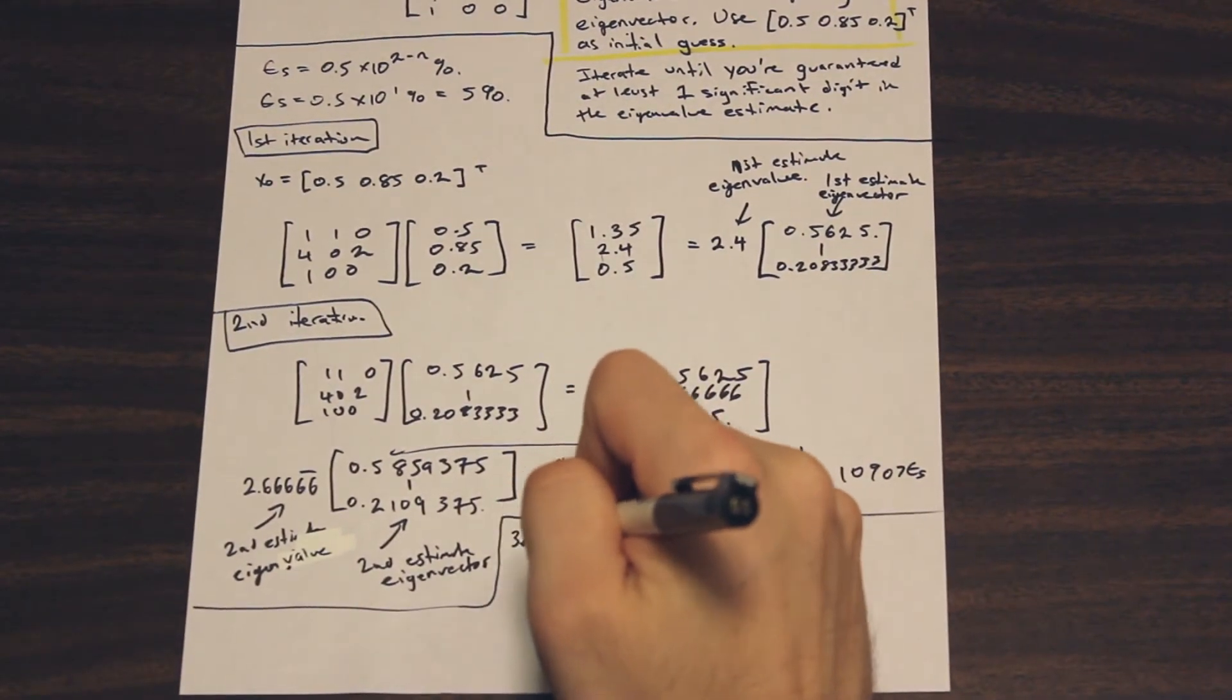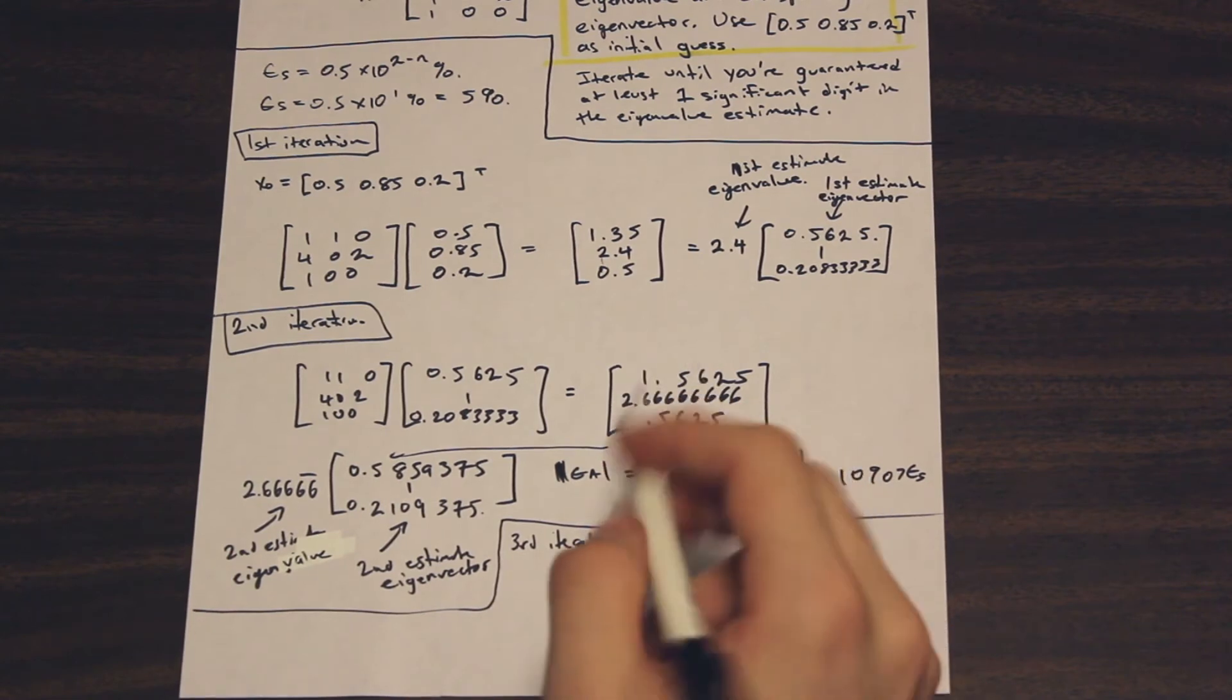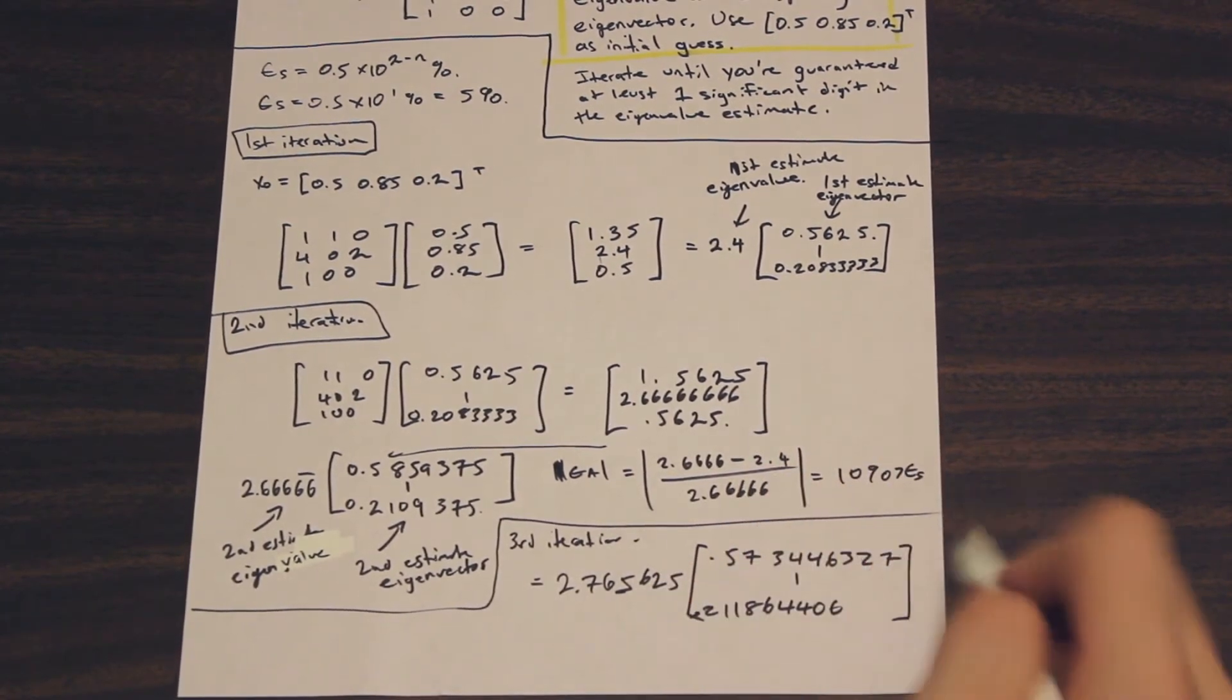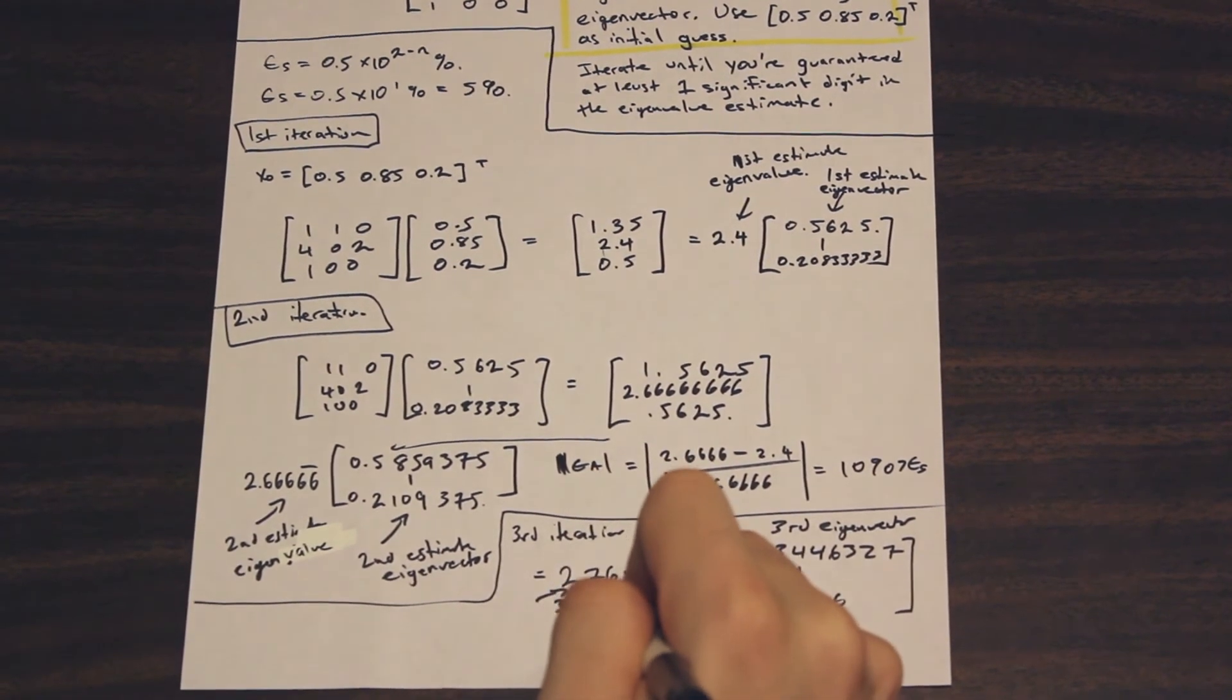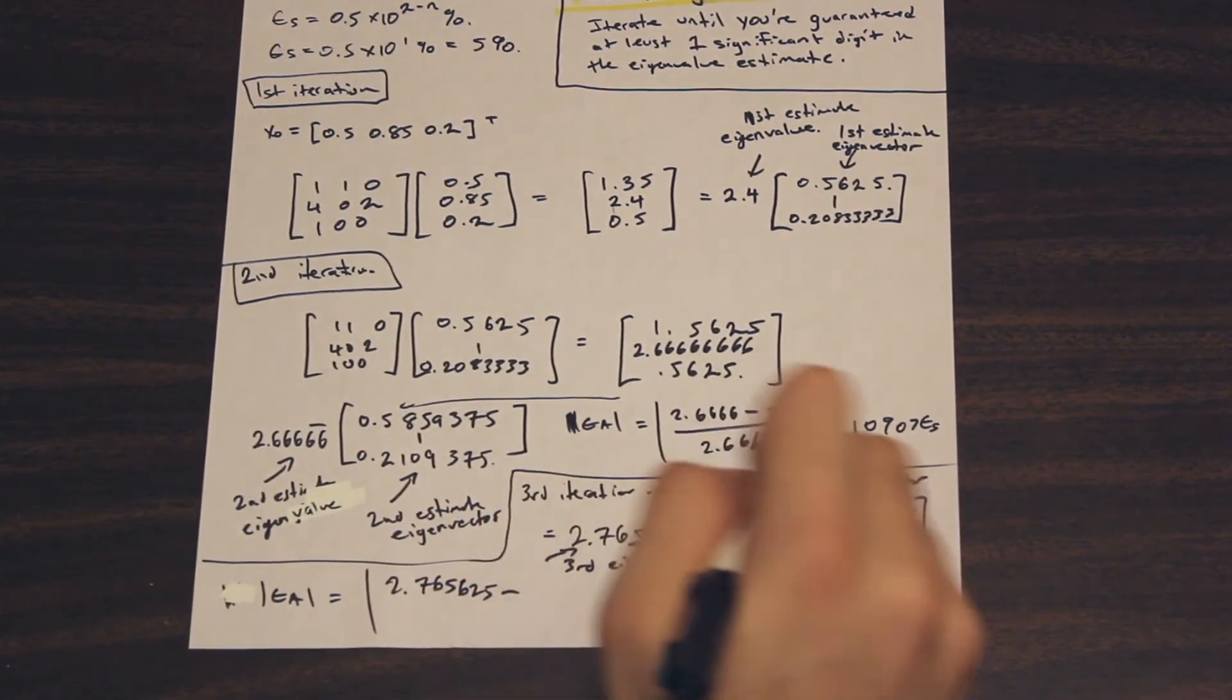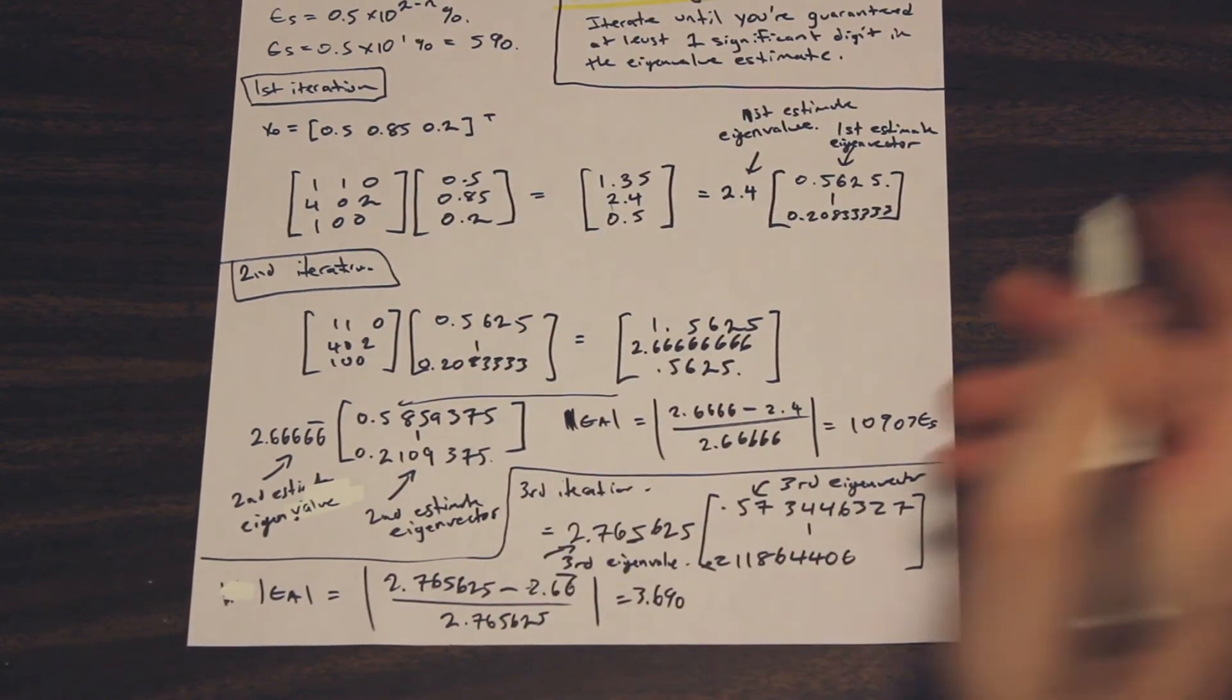And I'm not really going to write this whole thing out. You have A multiplied by this vector here, our second estimate for the eigenvector, and that is going to give us, if you factor it out, 2.765625, 1. And this is third eigenvector, third eigenvalue. And if we go ahead and calculate our absolute relative error for this, we just have minus this estimate here, right, which is 2.66, and that is going to give us a value of 3.6, and that's less than epsilon s, so we're good. So we can say, and this is a little small space to write the final answer, but I'm gonna go ahead and do it down here.